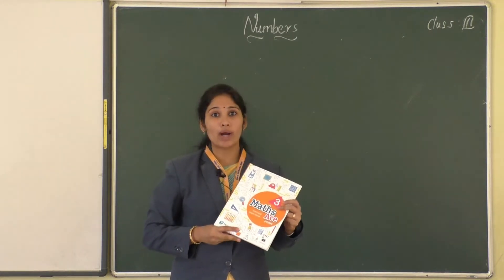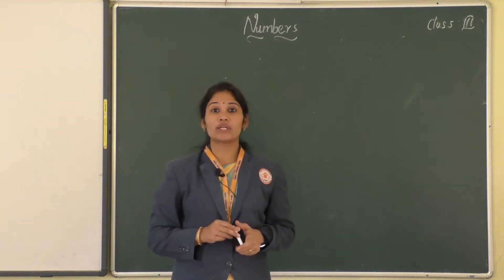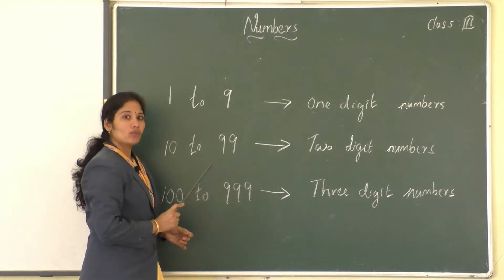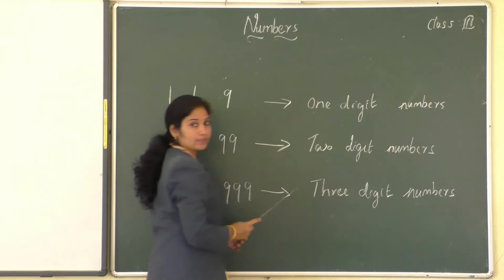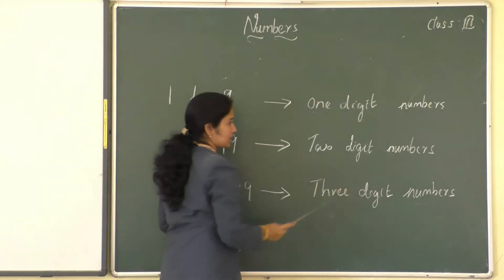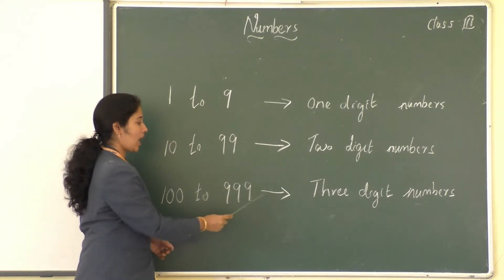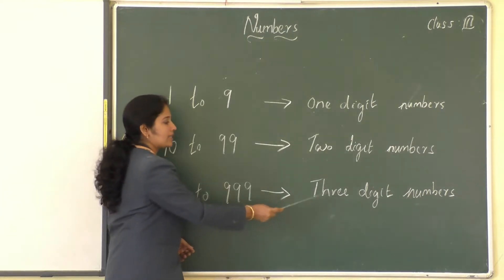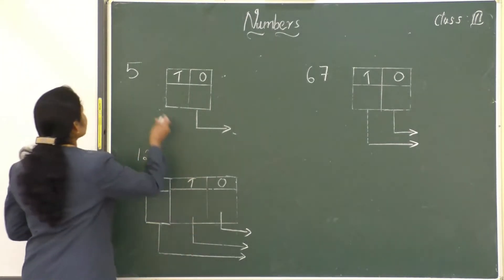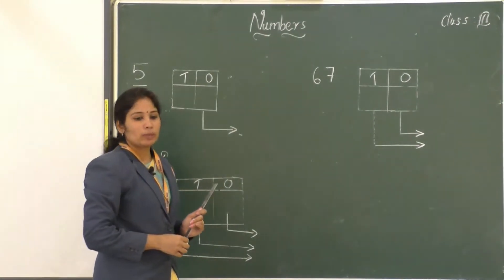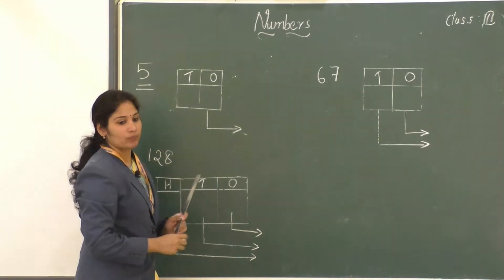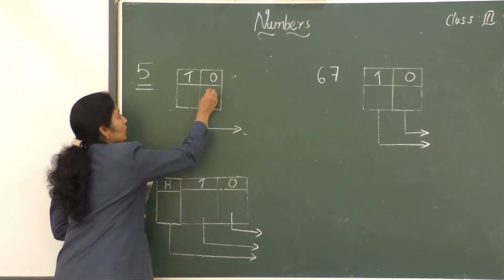Before we go to our new chapter, we will recall what we have learned last year. Hope all of you remember up to 3-digit numbers. 1 to 9 have only one digit — they are called one-digit numbers. 10 to 99 have two digits — they are called two-digit numbers. 100 to 999 have three digits — they are called three-digit numbers. Let's illustrate with an example. Consider number 5. Do you remember what O and T stand for? O stands for ones and T stands for tens.